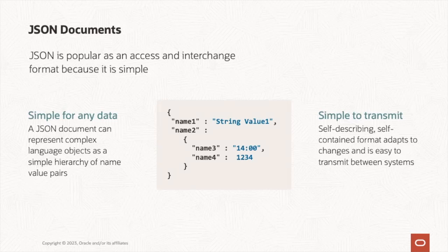In this example, we can see that name1 is a string as it is enclosed within double quotes. Name2 is a nested set of name-value pairs consisting of name3 and name4. Name3, which I assume is storing a timestamp, is being stored as a string because it too is also enclosed within double quotes. Meanwhile, name4 has no double quotes, so it's a numeric value.